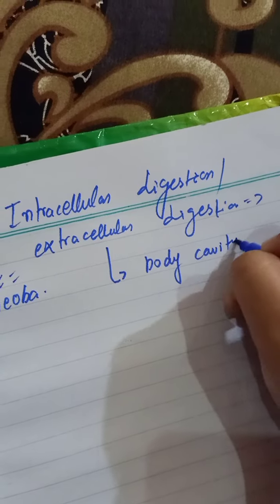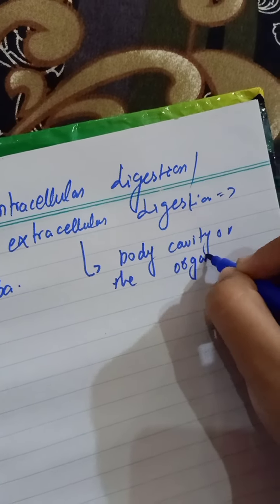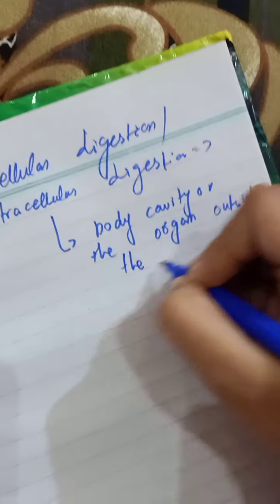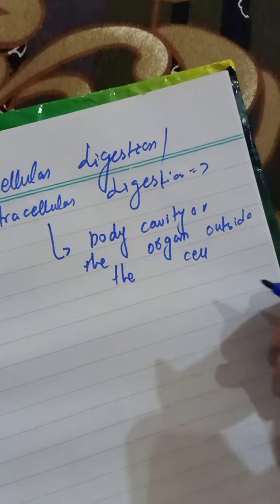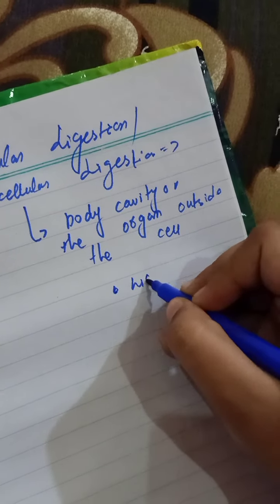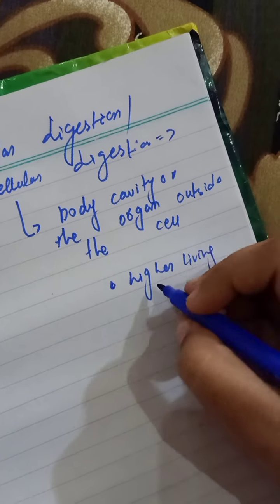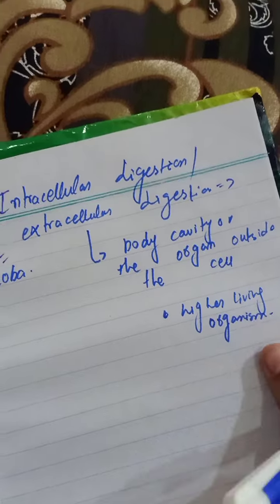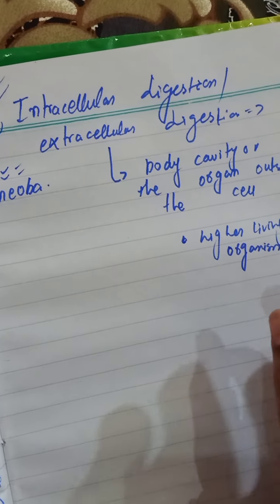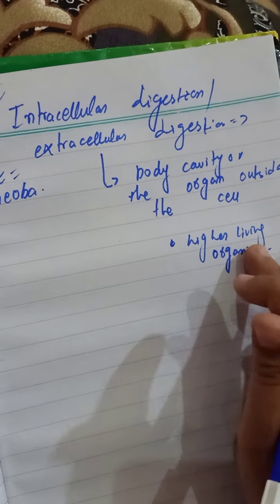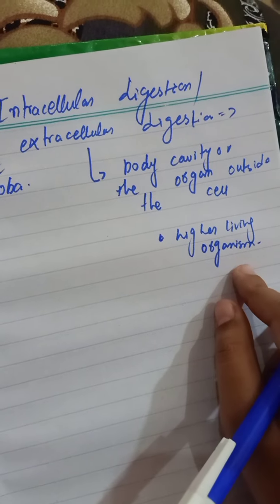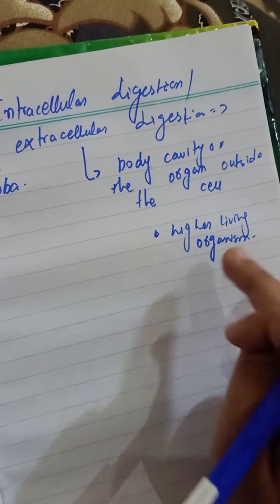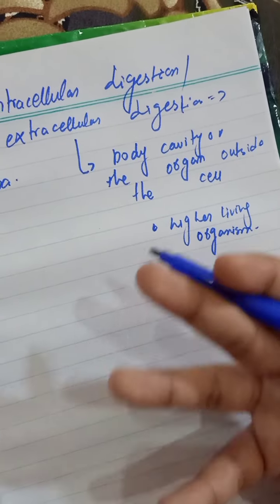All the higher living organisms are examples of extracellular digestion — like human beings and animals. They are having large food that cannot be diffused into the cell, so digestion cannot occur inside their cell. That's why extracellular digestion occurs in these organisms like human beings.